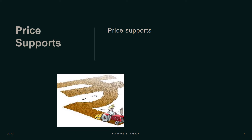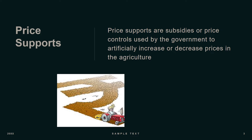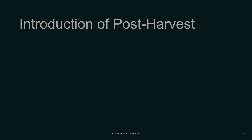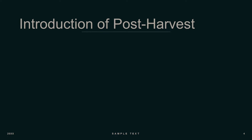Price Supports are subsidies or price controls used by the government to artificially increase or decrease prices in the agriculture market. Let's move on to the Introduction of Post Harvest.